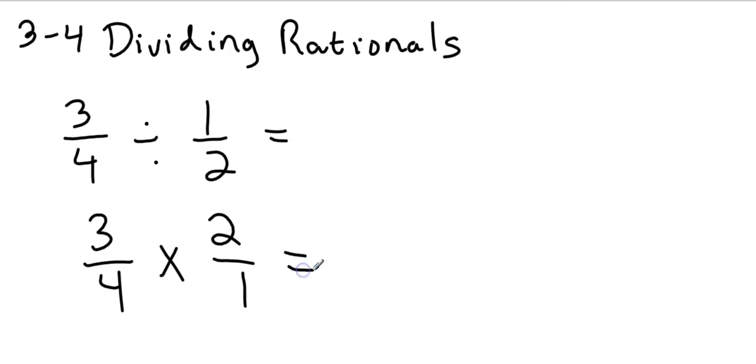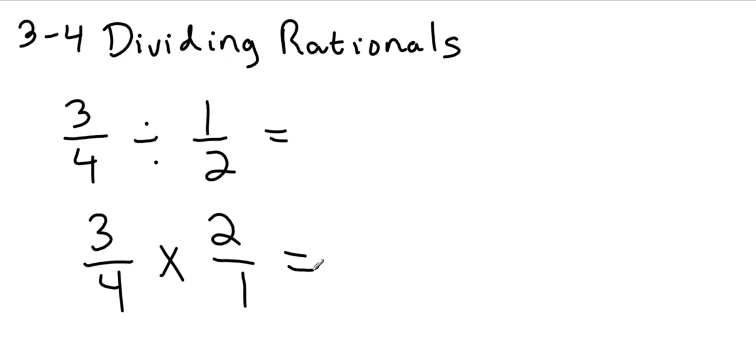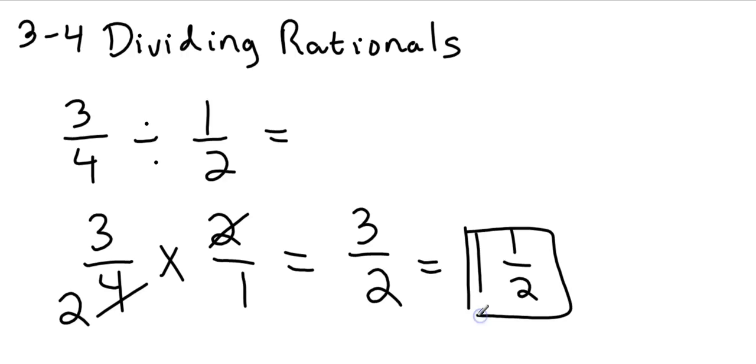So then I can take anything and cancel it into something else. That 2 is going to cancel into that 4 twice. And then I just multiply straight across. 3 times 1 is 3, and then 2 times 1 is 2. I do need to change this into a mixed number. So 2 is going to go into 3 one time with 1 half remainder. So my remainder is 1 and 1 half.